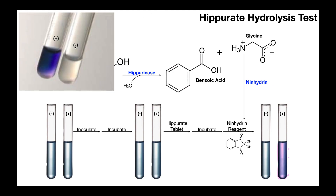To summarize: a negative test shows no color change, because the bacteria do not express Hippuricase and cannot hydrolyze Hippurate. A positive result is a color change to bluish violet, indicating that glycine is present from the action of Hippuricase — and that glycine reacts with ninhydrin and turns bluish violet. Hopefully this video gave you good information about the Hippurate hydrolysis test, the theory, and how to interpret it.